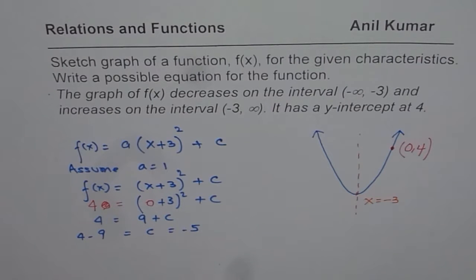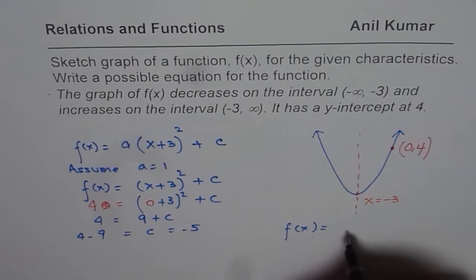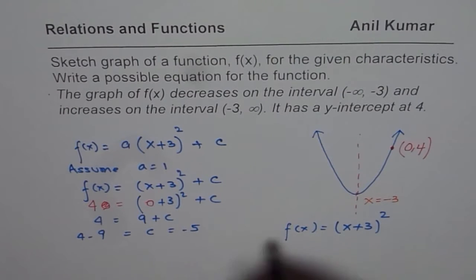So we get the value of c from this particular point and that gives us the equation. So we can say that results in function f(x) = (x+3)² - 5. You get an idea, so that is the equation of the given function.